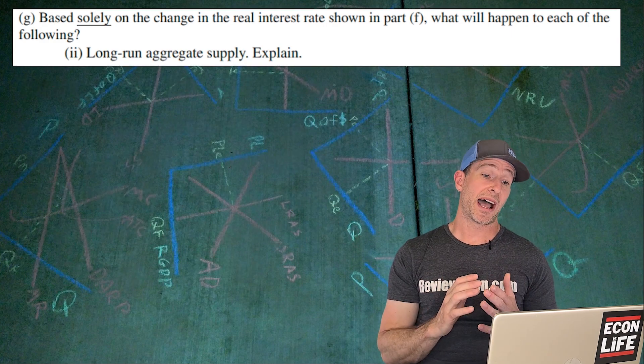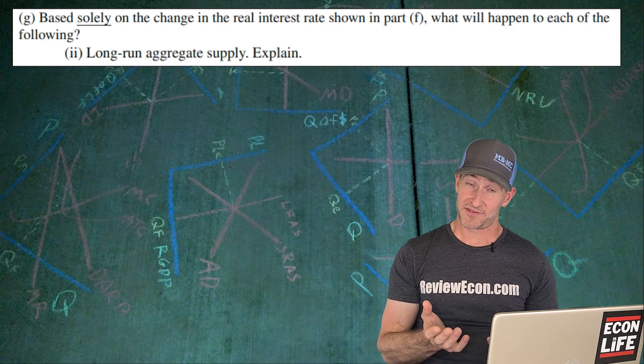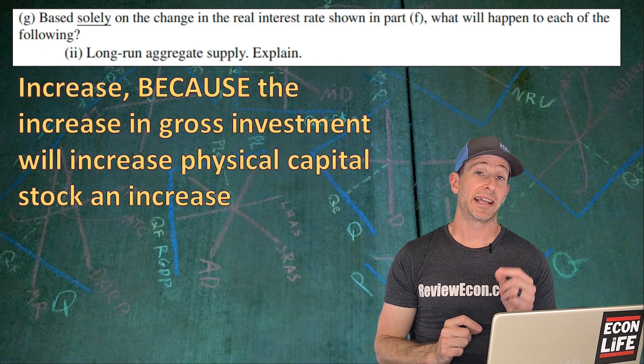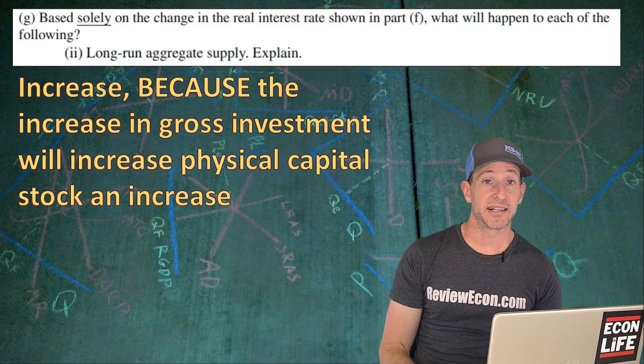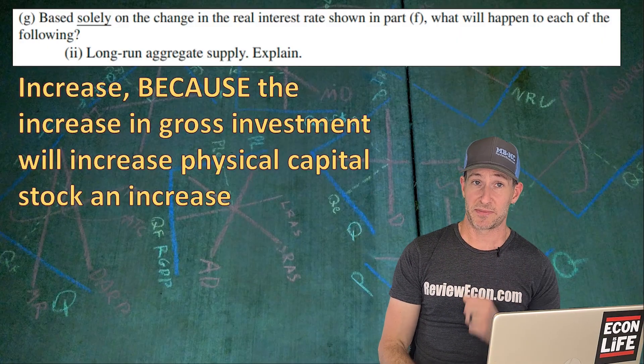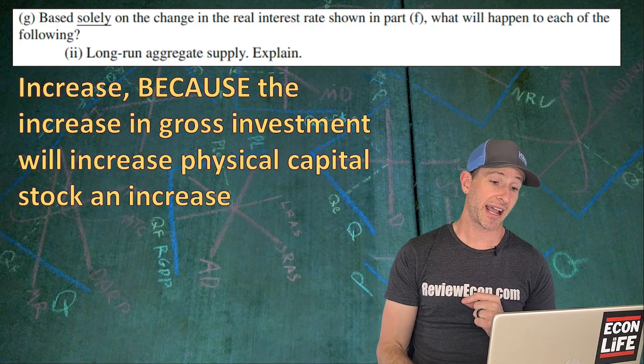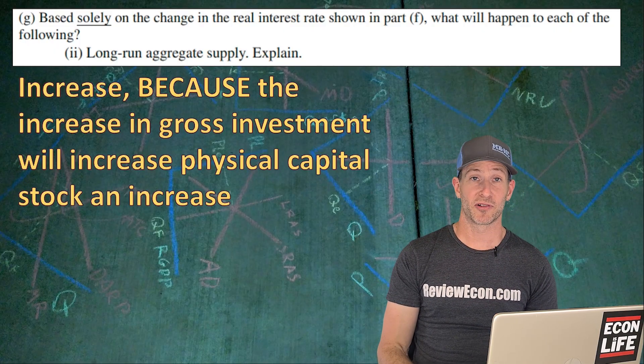Based solely on that change, what will happen to the long run aggregate supply curve? That long run aggregate supply curve is going to increase. And that's because the lower interest rate means greater quantities of gross investment, and that means physical capital is going to be increasing. So it increases the physical capital stock, and that causes us to have more potential real GDP in the long run.